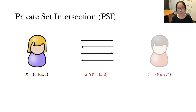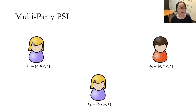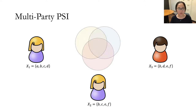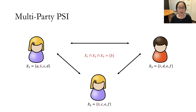In particular, Alice would have no idea about Bob's other elements, and vice versa. More generally, we can consider a multi-party PSI, where there are multiple parties, each party has a private set X1, X2, up to Xn, and they want to jointly compute the intersection of all the sets. Similarly, they can run a secure multi-party computation protocol, and by the end of the protocol, they can learn the intersection of all the sets, but nothing more.